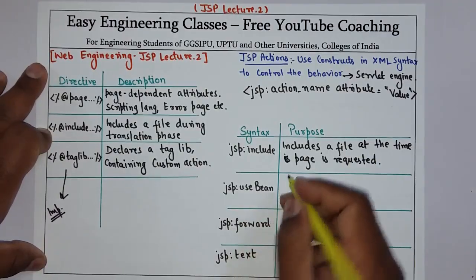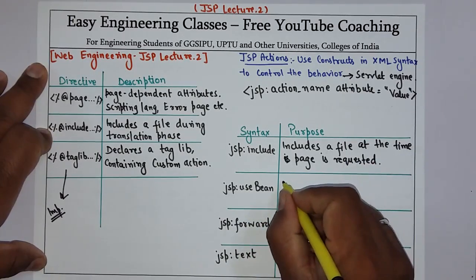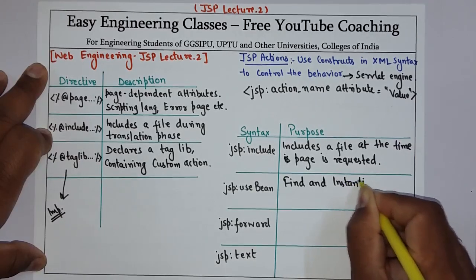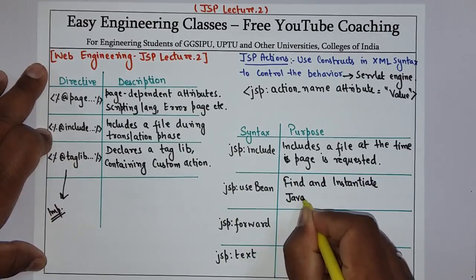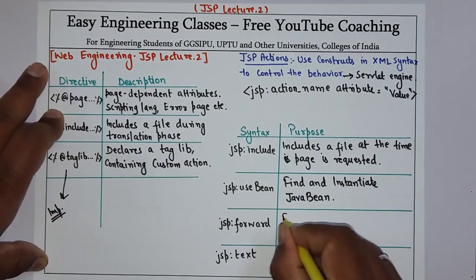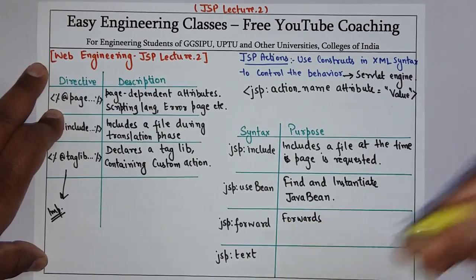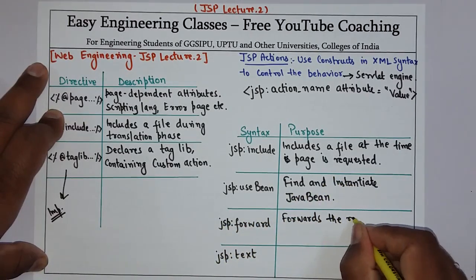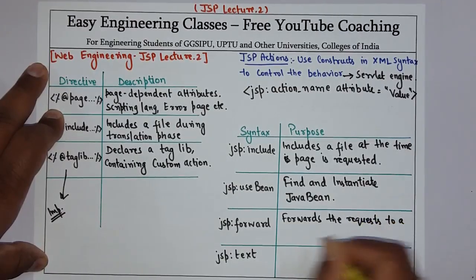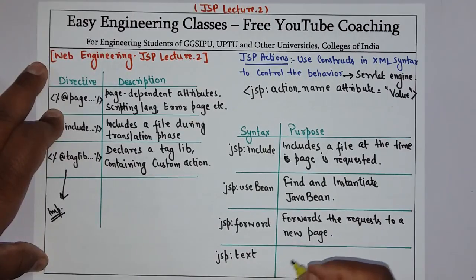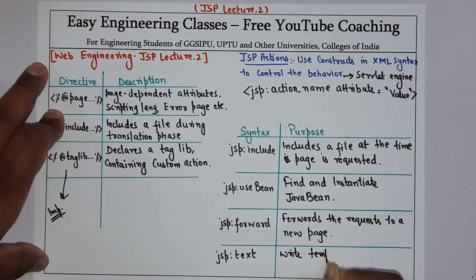Then we have jsp:useBean, which finds or instantiates a Java bean. Then we have jsp:forward, which forwards the request to a new page. This is very important because sometimes we need to forward a particular request to another custom page, so we use jsp:forward. Then we have jsp:text, which is used to write template text in JSP pages and documents.